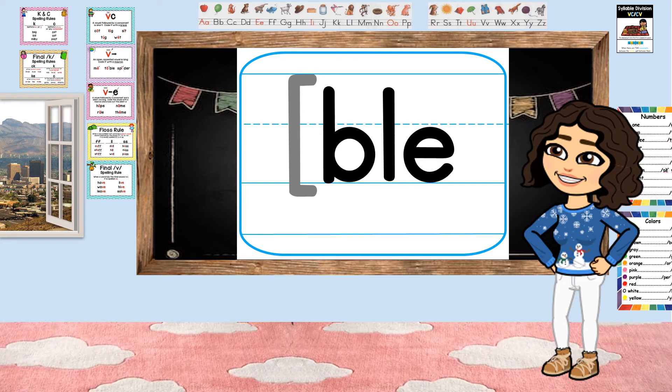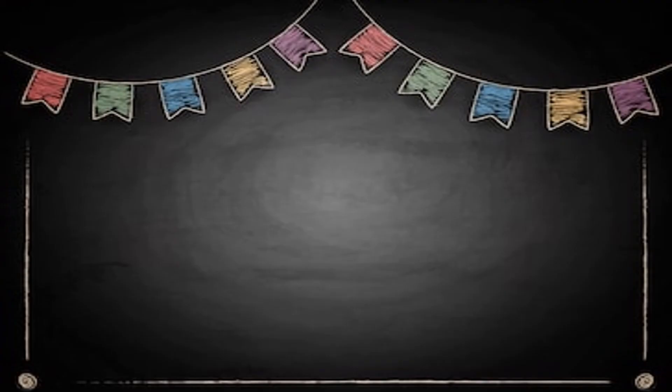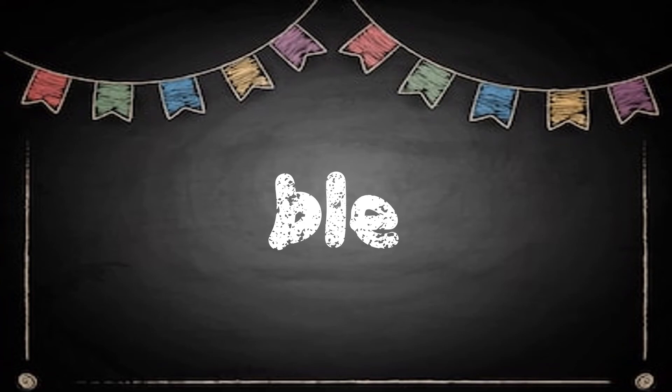So, boys and girls, today we have learned about final stable syllable BLE. When we see this card, we're going to say 'final stable syllable BLE.' And to help us remember what sound it makes, we have 'bubble,' 'bull.' When I tell you the 'bull' sound, we're going to write and say 'final stable syllable BLE.'